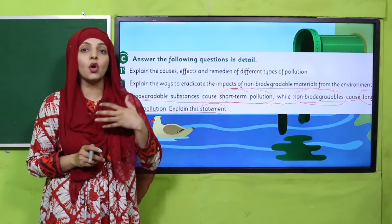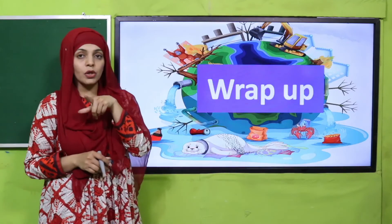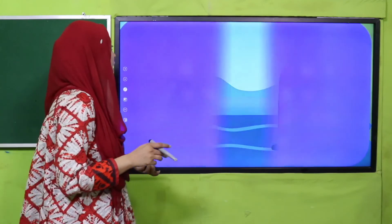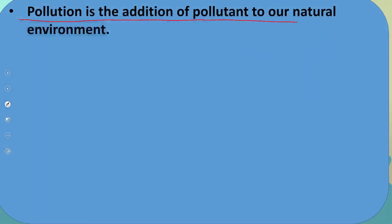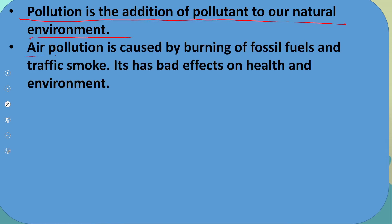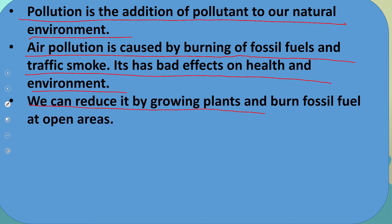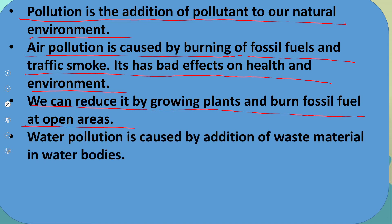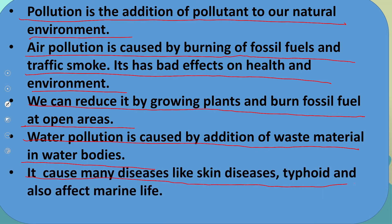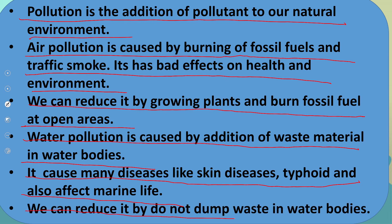Write it down in your notebook. For the wrap-up: in this unit we have learned that pollution is the addition of pollutants to our natural environment. Air pollution is caused by burning of fossil fuels and traffic smoke; it has bad effects on health and environment, and we can reduce it by growing plants and limiting fossil fuel burning. Water pollution is caused by addition of waste material in water bodies; it causes diseases like skin diseases and typhoid, and affects marine life. We can reduce it by not dumping waste in water bodies.